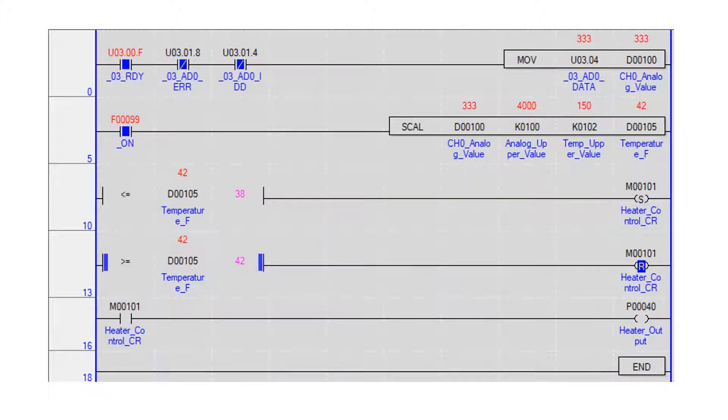To read the analog value, the module ready bit must be on. The channel 0 error bit and channel 0 disconnected bit must be off. A move instruction moves the analog data from the module channel 0 to memory location D100.